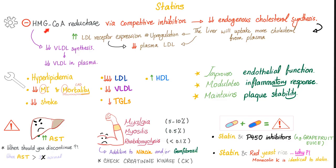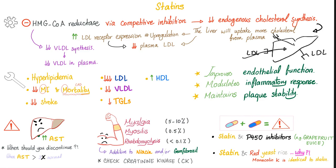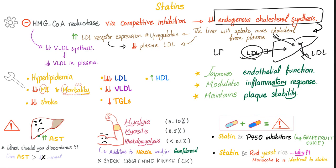Statins inhibit HMG-CoA reductase by competitive inhibition. This decreases endogenous cholesterol synthesis in the liver. When cholesterol synthesis is suppressed, the liver upregulates LDL receptors on its surface, increasing LDL receptor expression. The liver then consumes more LDL from the plasma to use for cholesterol production, thereby decreasing plasma LDL levels.